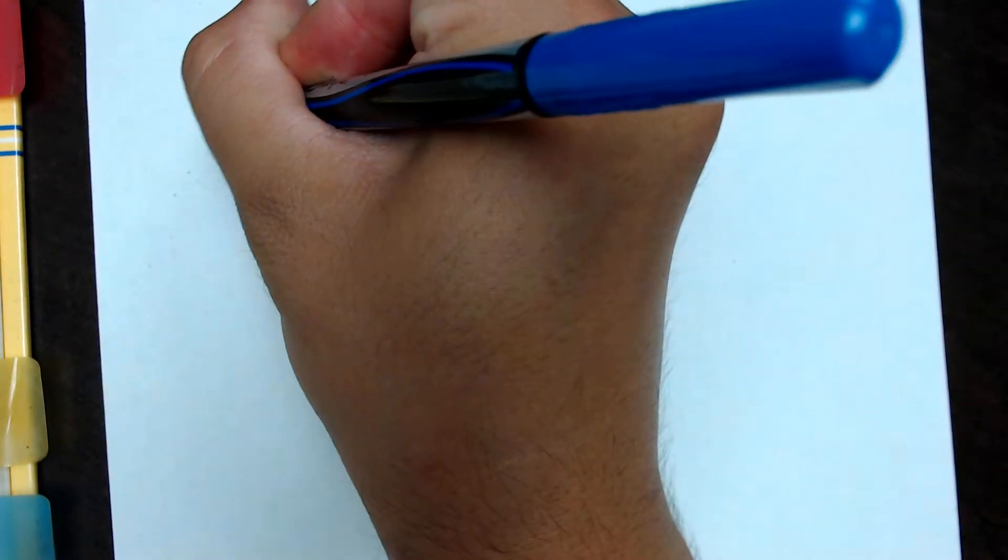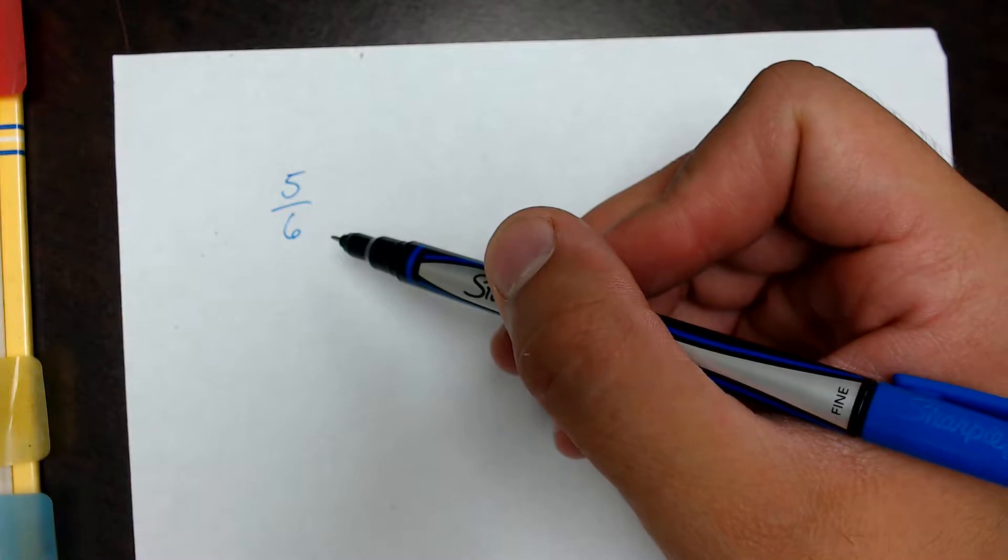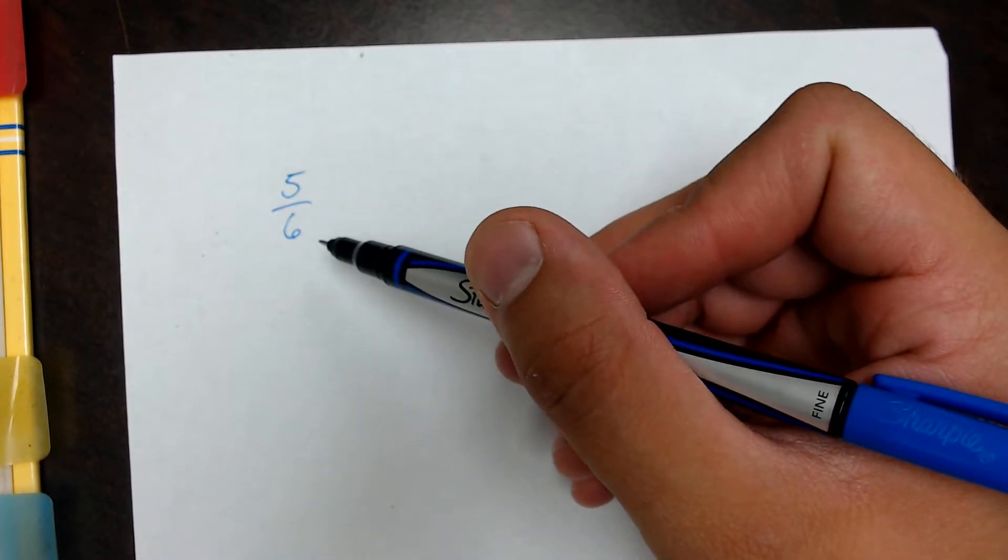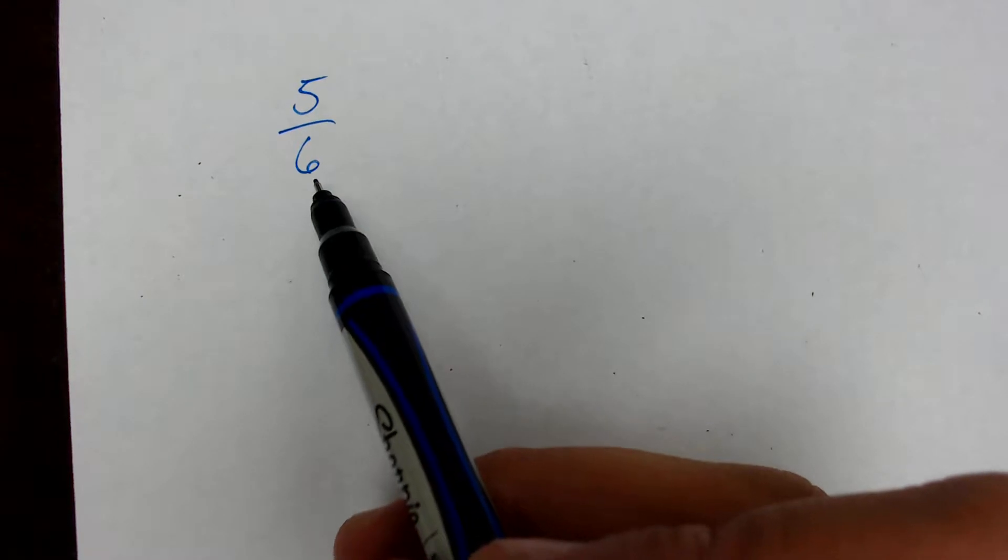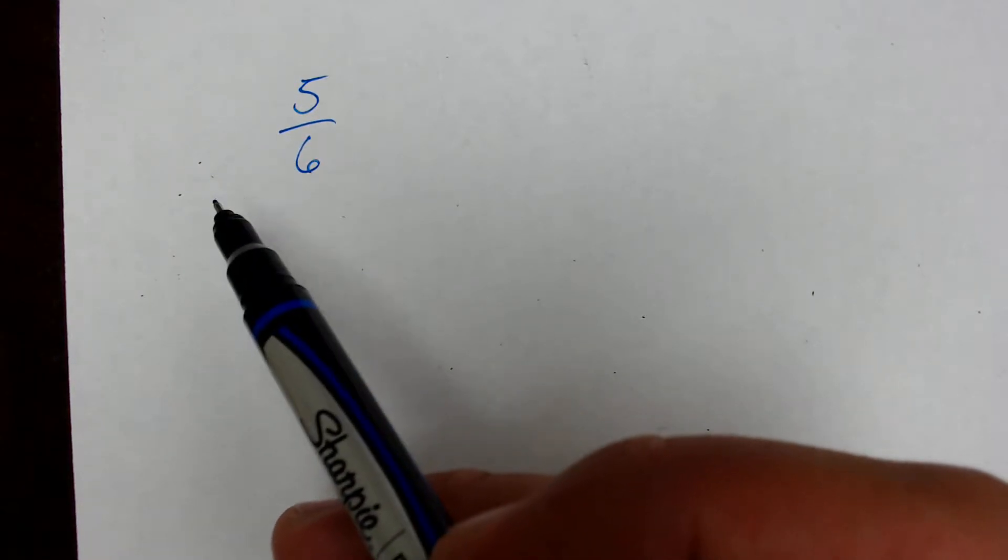So let's take the fraction 5 sixths. So the top number we call the numerator, the bottom number we call the denominator. The denominator tells us how many groups our quantity is broken into. In this case, our quantity is broken into six groups. And the top number tells us how many of those groups we're dealing with. In this case, five groups. So five out of the six groups are what we're talking about.